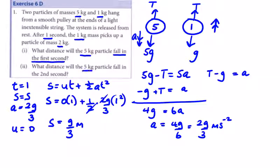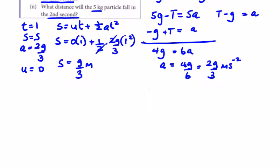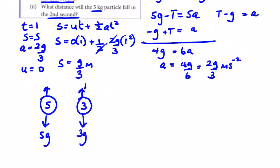What distance will the 5 kg fall in the second second? This is conservation of momentum. The system is released from rest, and after one second it picks up another 2 kg. Let's do our equations first. We've got a 5 now and a 2 plus 1, we've got a 3. We'll call it acceleration b because it's changed.